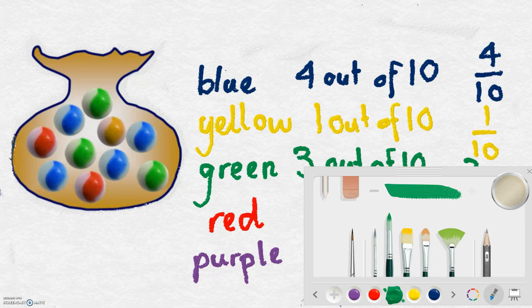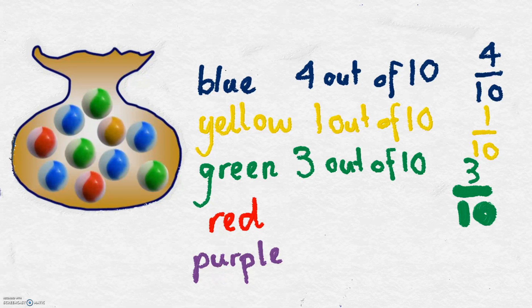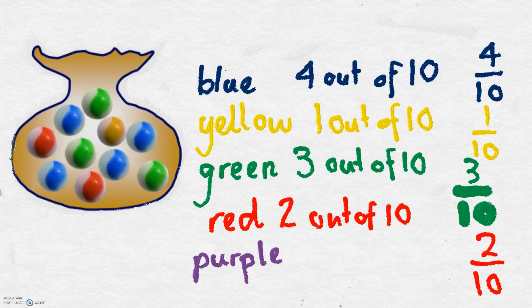Let's look at the red marbles. I have two red marbles in the bag. So I have two out of ten chance, written as a fraction. Two out of ten of selecting a red marble.